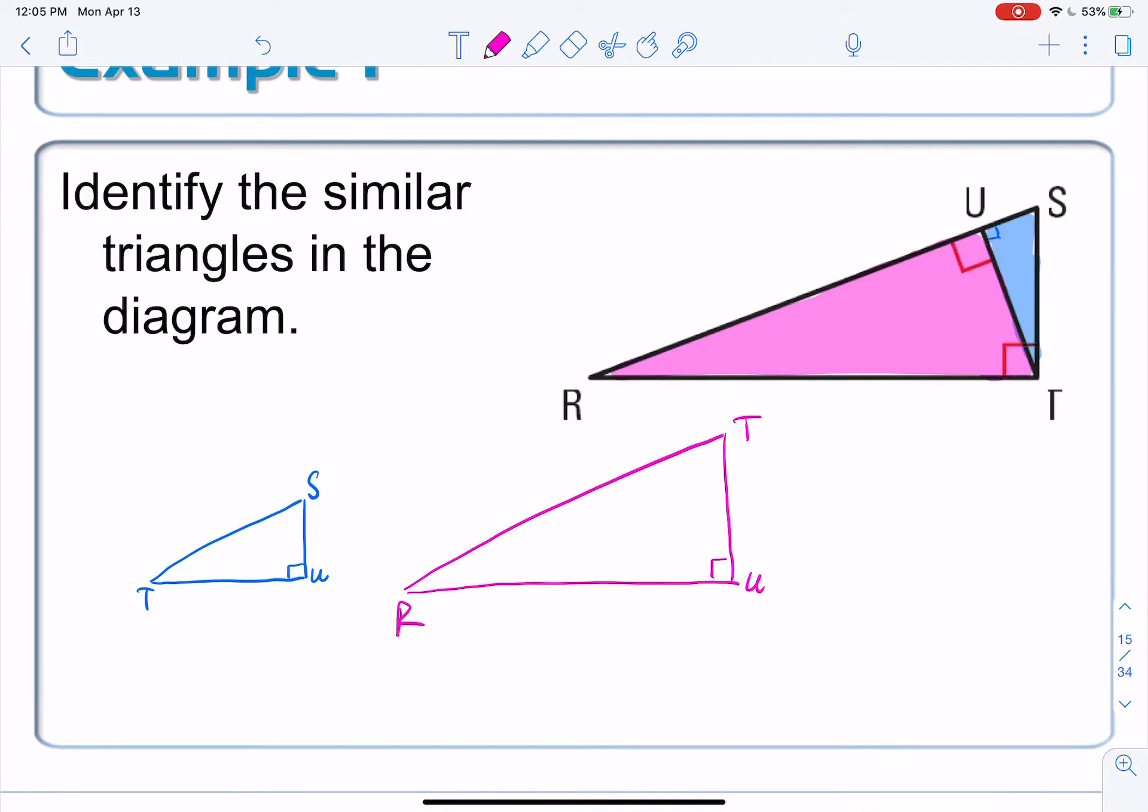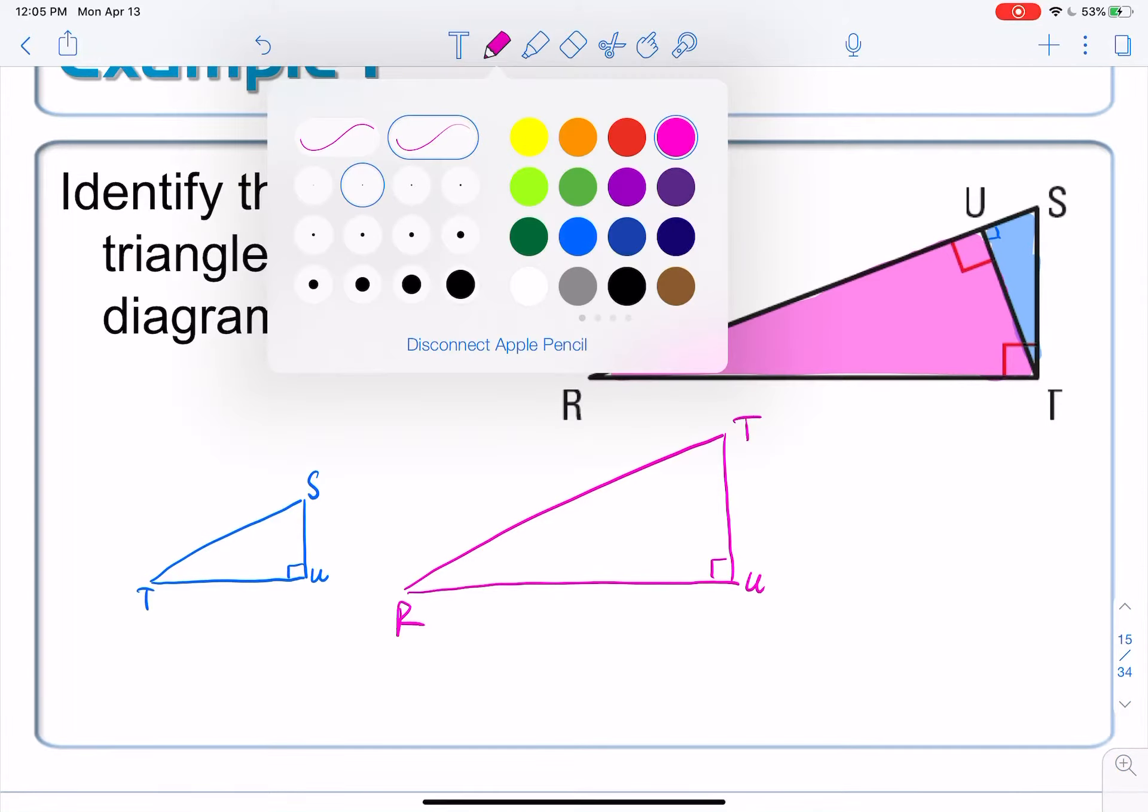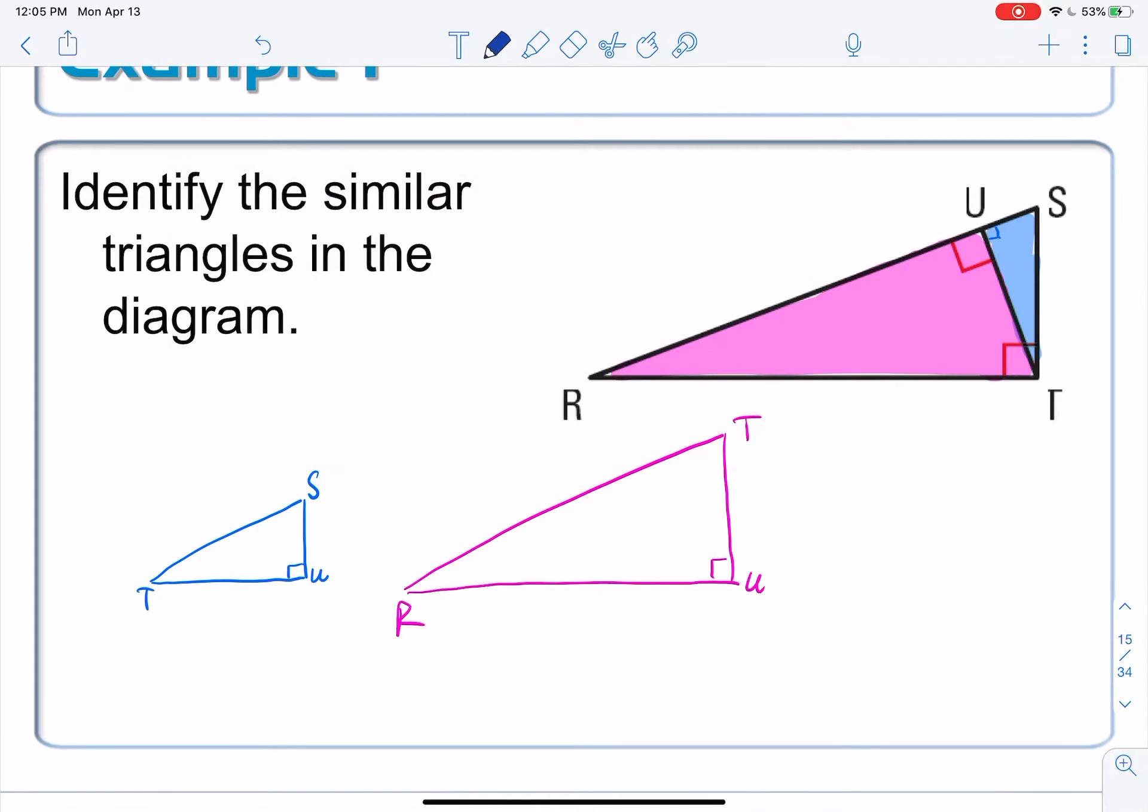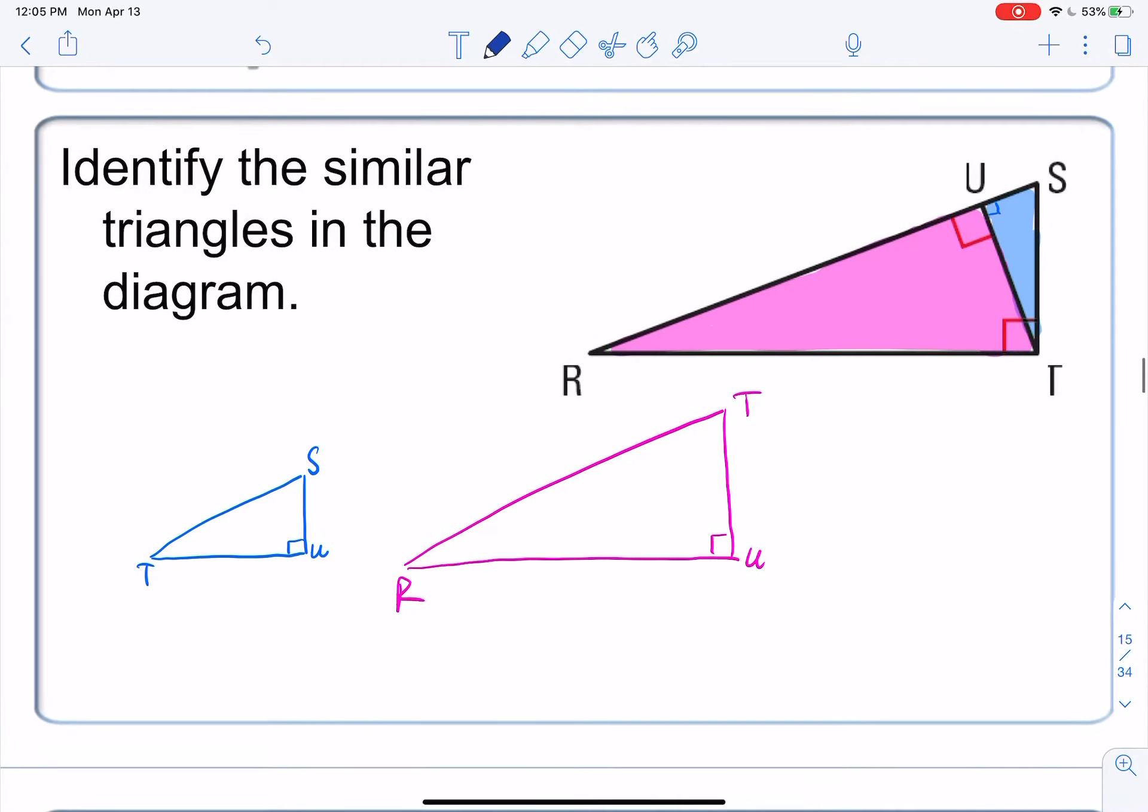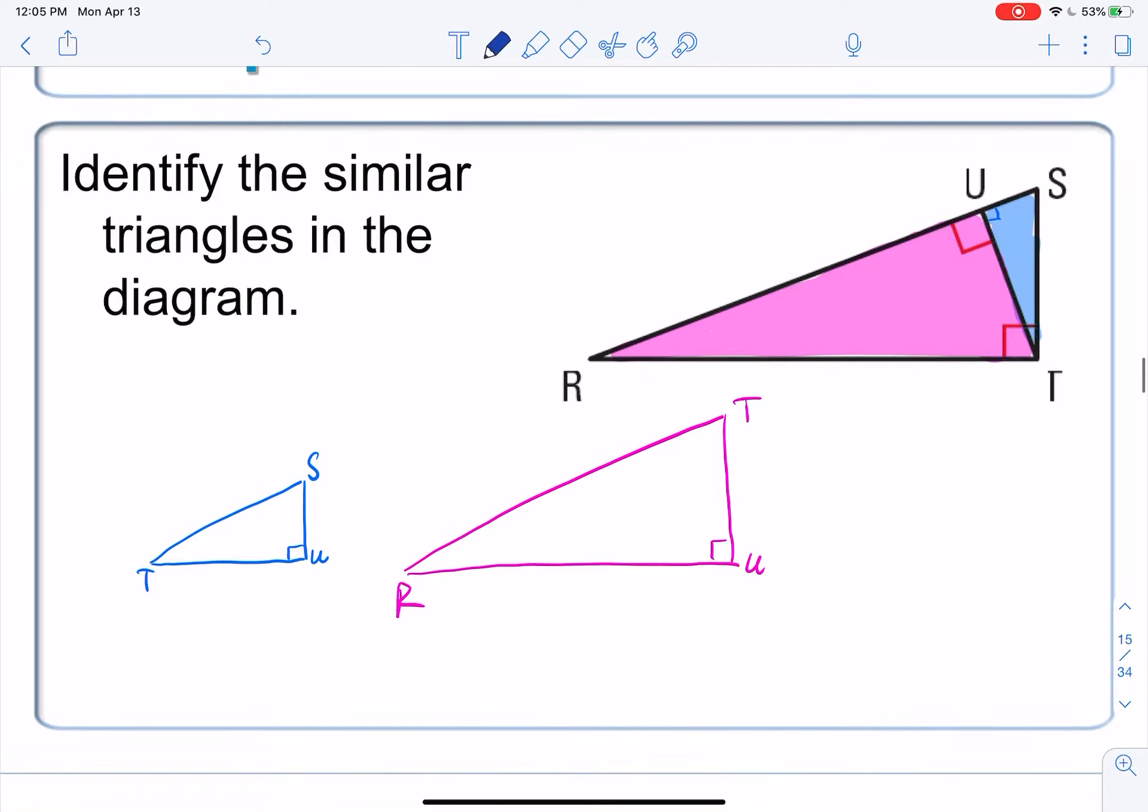Now we're ready to write ourselves a similarity statement that says that all three of these right triangles are similar to each other. So let's start with the original one. The original one, you can start with any letter that you want to. Let's call it SRT. And now go in the exact same order for each of the other ones.